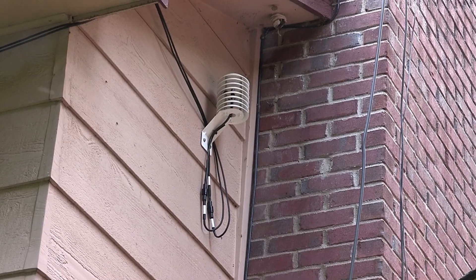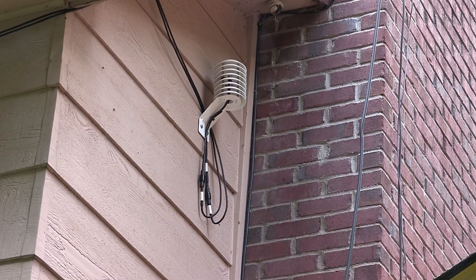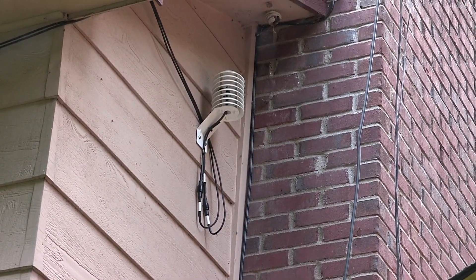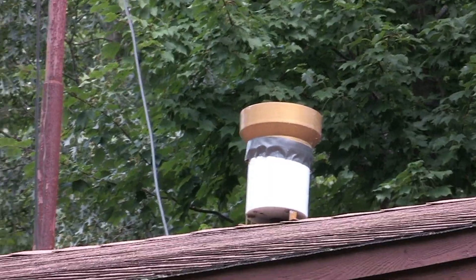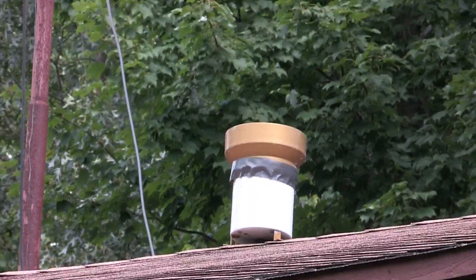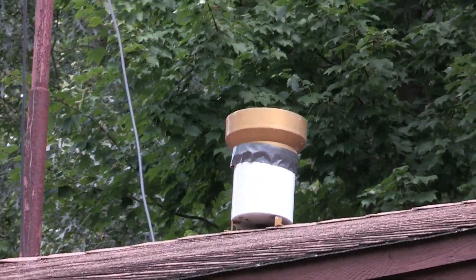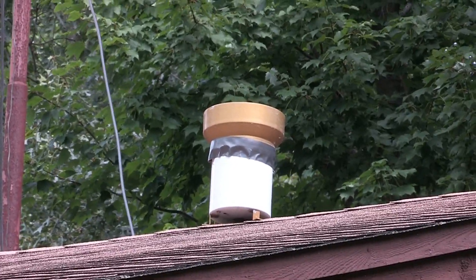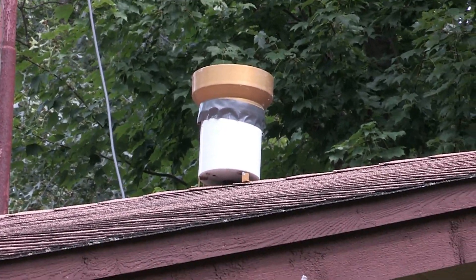And there is the outdoor temperature and humidity sensor. There on the roof is the rain gauge. That was the only piece of equipment that I was able to save over from the old weather station.